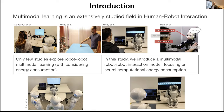Multimodal learning is a widely explored area in machine learning and robotics, especially in human-robot interaction. But only a few studies investigated multimodal learning in robot-robot interaction. And what is more, a limited number of those studies addressed multimodal learning focusing on energy consumption. So in this study, we combine these less explored aspects.